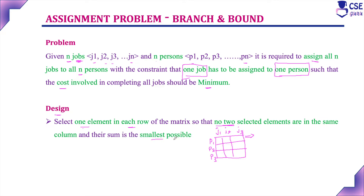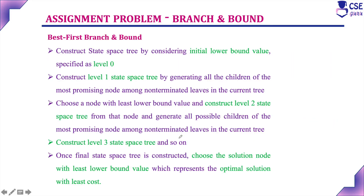The goal is to find the smallest possible cost. This assignment problem can be implemented using the best-first branch and bound technique. In this technique, we first construct a state space tree. Both backtracking and branch and bound solve problems by constructing a state space tree. The best-first branch and bound technique constructs the state space tree by considering an initial lower bound value, considered at level 0.